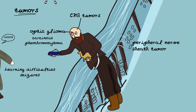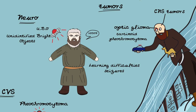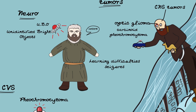We all know that Hodor isn't all quite there, so that's why he was put into the neuro side of things. He's associated with learning difficulties and seizures, which we all remember. He's also known to have UBOs — unidentified bright objects — that we see on MRI scans.